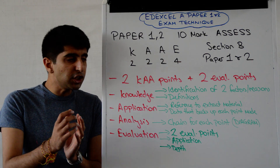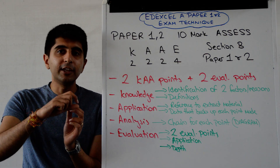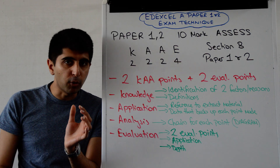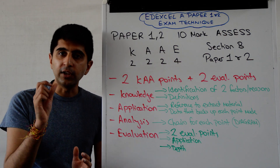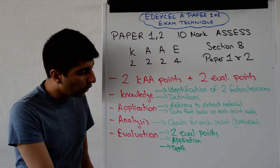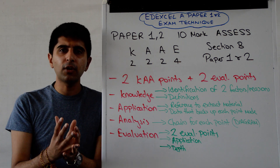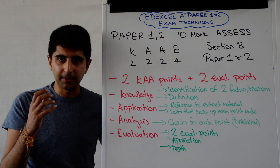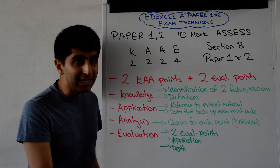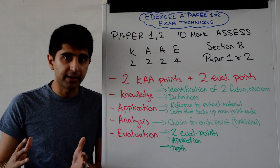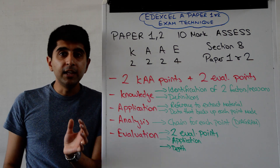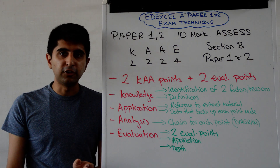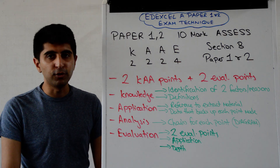There are four marks available for evaluation. For each KAA point that you make, you're looking to evaluate that point. Make an evaluation point but explain it in a bit more depth to get the second mark for each evaluation point. Also look to find something in the extract material to back up your evaluation point — that's another way to safeguard yourself and make sure you get two marks for each evaluation point, which is four marks in total. A very similar structure to the eight-mark examine question, just a little more depth needed in your evaluation, and you get the full 10 marks — an absolute gift.